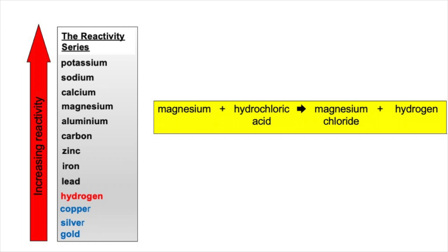Magnesium is a lot more reactive than hydrogen, so it kicks out hydrogen from hydrochloric acid and forms magnesium chloride and hydrogen gas. The majority of metals in the reactivity series are more reactive than hydrogen and would therefore react with acids such as hydrochloric acid, nitric acid, and sulfuric acid. Metals such as copper, silver, and gold that are less reactive than hydrogen would not react with these acids, as they cannot displace hydrogen.